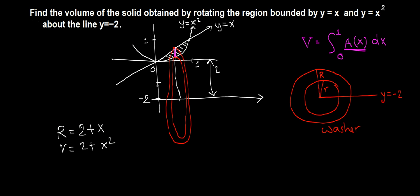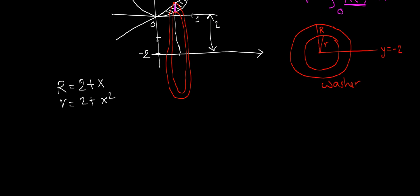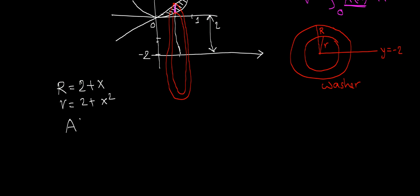For this washer the outer radius is 2 plus x and inner radius is 2 plus x squared. Then we can find the area of this washer. Area will be in terms of x: that's pi R squared minus pi r squared. We can pull pi outside and factor: pi times R squared 2 plus x quantity squared minus r squared 2 plus x squared quantity squared.